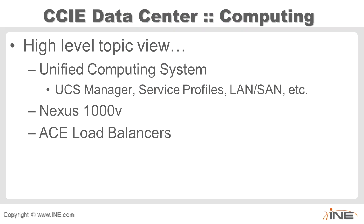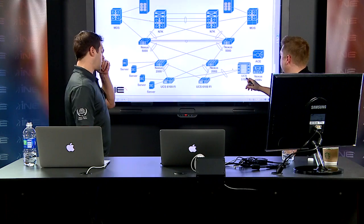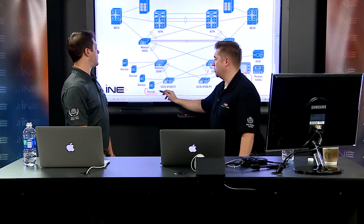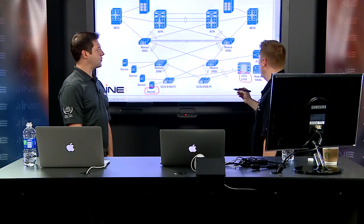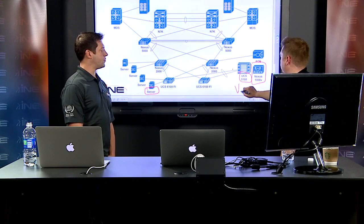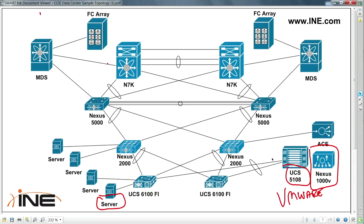Two other topics in computing are the virtual Nexus 1000v switch and the ACE load balancer. The Nexus 1000v runs as a virtual machine — on your UCS chassis or on a regular bare-metal server like a 1U Dell server. It's basically a VMware guest that is a logical representation of what would normally be a physical Nexus 5K or Nexus 7K.